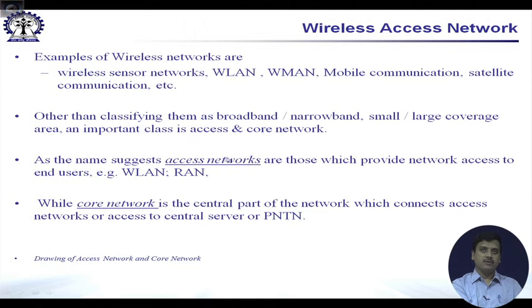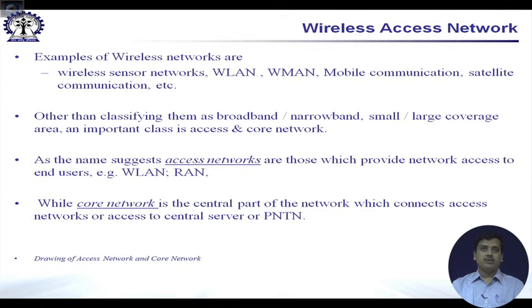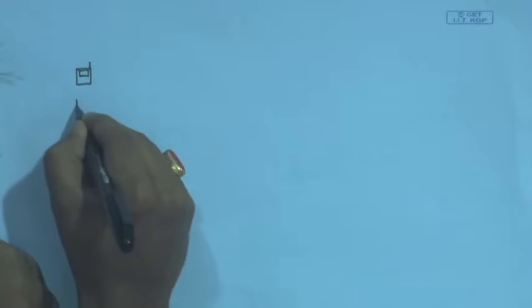What we are mainly interested in for this course is the access part of the network. The access network is the part that provides connectivity to a network — examples are wireless LAN or the radio access network. The core network is the central part that connects access networks to a central server or PSTN.